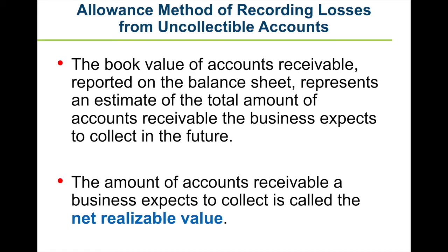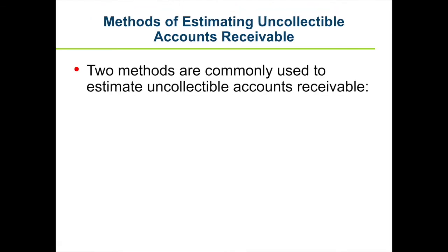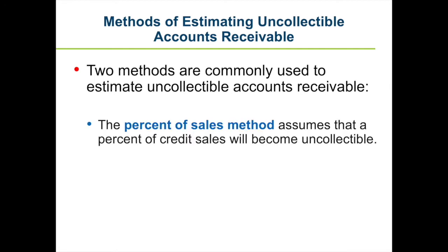Two methods are commonly used to estimate uncollectible accounts receivable. The first is the percent of sales method, which assumes that a percent of credit sales will become uncollectible. For example, a business might estimate that 0.5% of its sales on account will become uncollectible — so a business with credit sales of $700,000 would estimate that $3,500 will not be collectible.